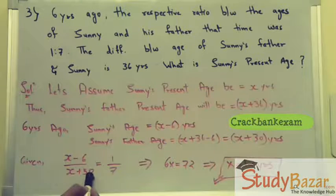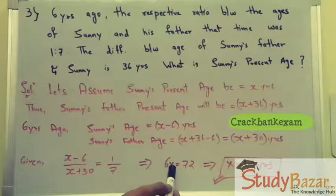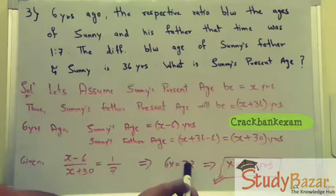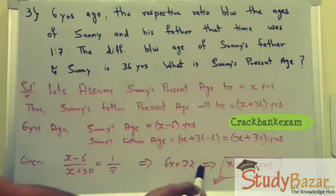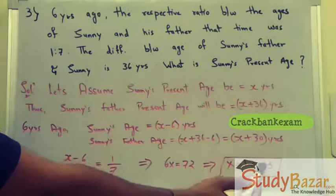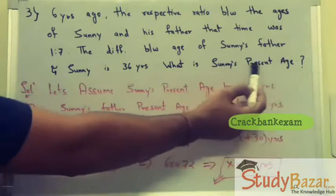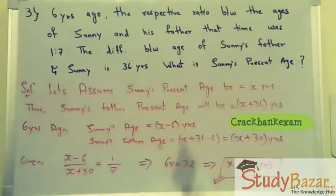Setting up the ratio of Sunny's age to his father's age six years ago as 1:7 and cross-multiplying, we get 6x equals 72. Solving this, x equals 12, which is Sunny's present age.